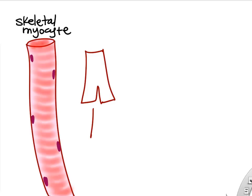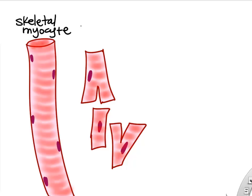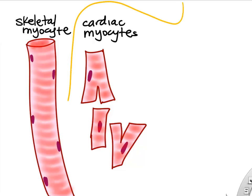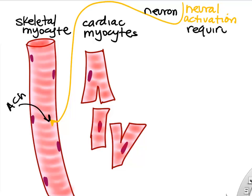Skeletal myocytes are shown alongside other types. Cardiac myocytes are much smaller and have a single nucleus. Skeletal muscle is controlled by a neuron that must send a signal and release a chemical such as acetylcholine for it to contract. If you ever have nerve injury, your muscle cell will no longer get a signal and will not contract.